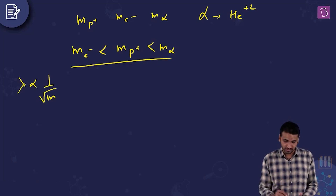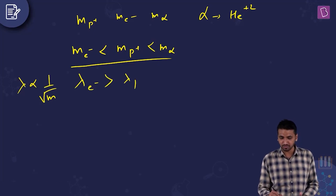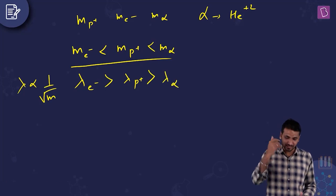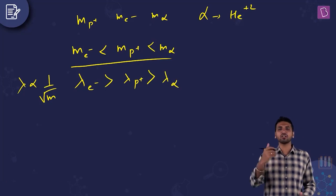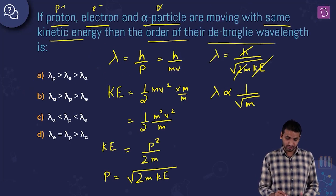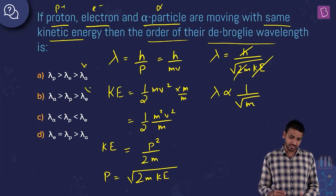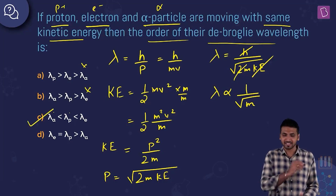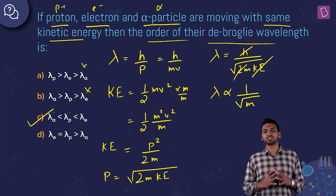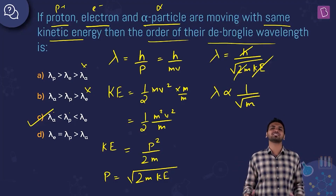Since λ is inversely proportional to √mass, the order of wavelength is: electron has the highest wavelength, then proton, then alpha particle. Looking at the options, option C — electron > proton > alpha — exactly matches what we calculated. Option C is the right answer.